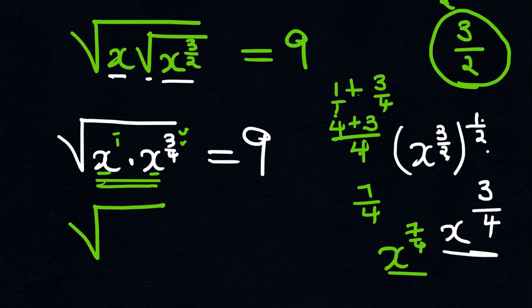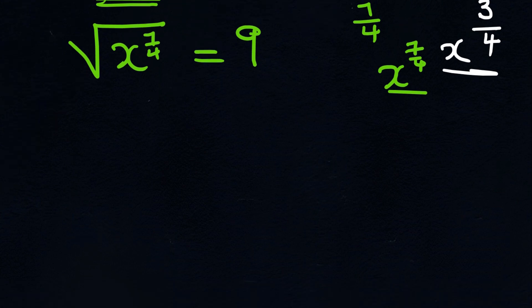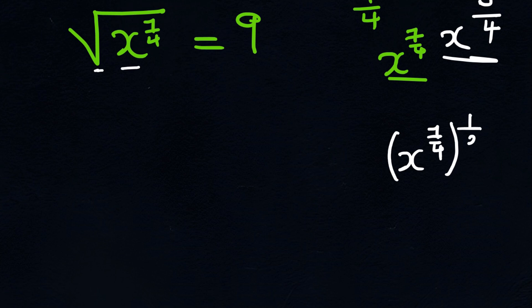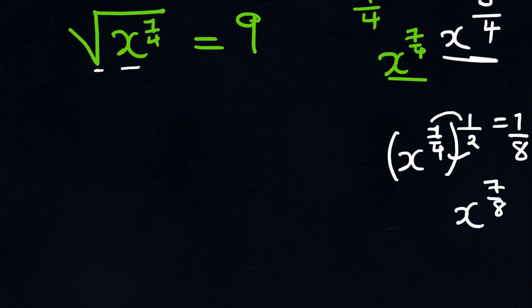So we have the square root of x to the power 7 over 4, equal to 9. We eliminate this square root by changing it to the power of half: x to the power 7 over 4, raised to the power of half. Multiplying the exponents, 7 times 1 is 7 and 4 times 2 is 8, giving us x to the power of 7 over 8. Our next step is therefore x to the power 7 over 8 equals 9.